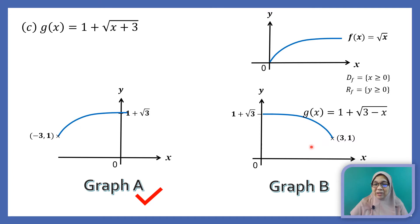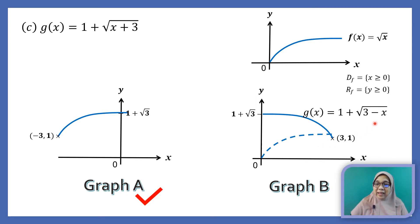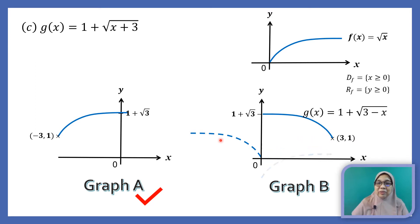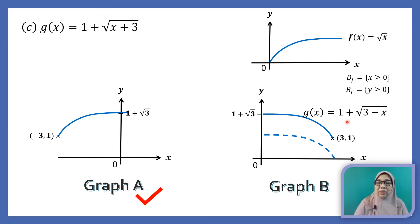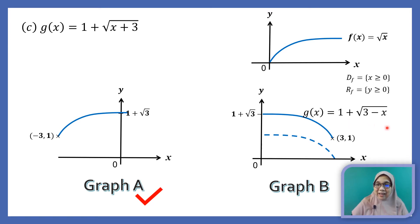Let us carry out the transformation based on this function to confirm that the answer is correct. Here is the parent function. The negative indicates that we reflect the graph horizontally across the y-axis. Then we shift the graph 3 units to the right. Plus 1 indicates that we shift the graph 1 unit upwards. Thus, this confirms that g(x) equals 1 plus square root of 3 minus x is the correct answer.